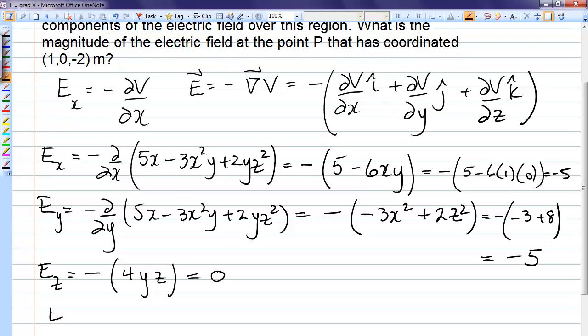So if we were to write our vector in terms of its components, we would write negative 5, negative 5, 0. To find the magnitude, we simply take the square root of each of those components squared, which is the square root of 50, which works out to be 7.07 newtons per coulomb.